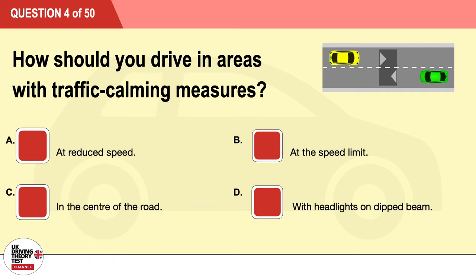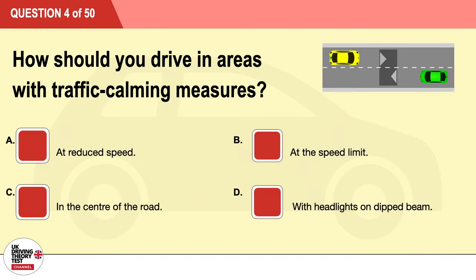Question 4: How should you drive in areas with traffic calming measures? A: At reduced speed. B: At the speed limit. C: In the center of the road. D: With headlights on dipped beam. The correct answer is A: at reduced speed.